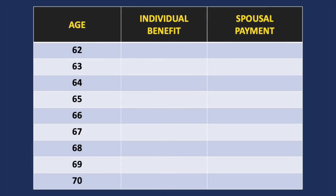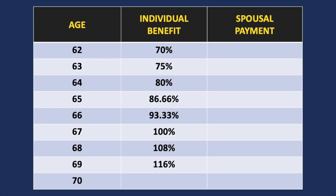Assuming full retirement age is 67, an individual is entitled to 100% of their primary insurance amount. If they file one year early, that's reduced to 93 and a third percent. Two years early, that becomes 86 and two thirds percent. These reductions continue all the way down to the earliest eligibility age of 62, where an individual's benefit is reduced down to 70% of the primary insurance amount. If someone files after full retirement age, their own benefit is increased by 8% per year all the way up until age 70.